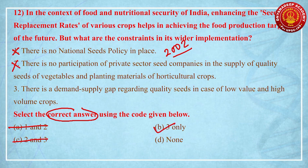Whenever you are in confusion, always try to go through the options — you will be able to solve the questions in a neat and clear manner. Here, even though you may not know everything, you can solve the question purely on the basis of logic. Statement 3 says there is a demand-supply gap regarding quality of seeds in the case of low value and high volume crops — and this is the correct answer.